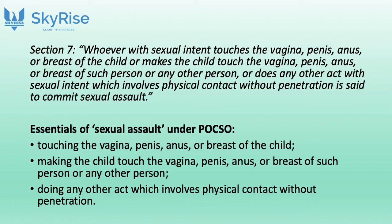Let's study Section 7 first. It requires touching of the vagina, penis, anus, or breast of the child, or making the child touch the vagina, penis, anus, or breast of such person or any other person, or doing any other act involving physical contact without penetration. The High Court ignored the intention of the accused and focused only on the physical contact element. Even though the accused touched the child's breast over her dress, the High Court concluded that since there was no skin-to-skin touch, there was no physical contact involved, and the accused was not guilty of sexual assault.